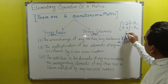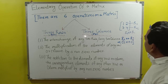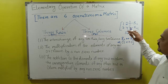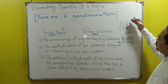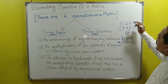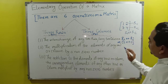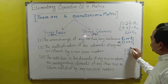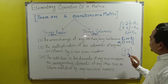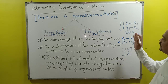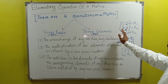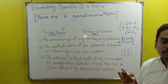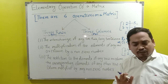If you apply R1 interchange with R2, what will happen? The second row becomes the first row and the first row becomes the second row — so the result will be [3, 4; 1, 2]. This is what the first operation tells us. Similarly, it can be applied for columns.